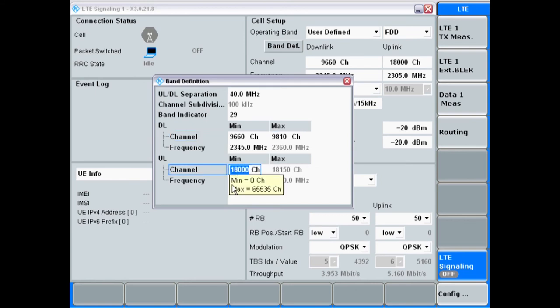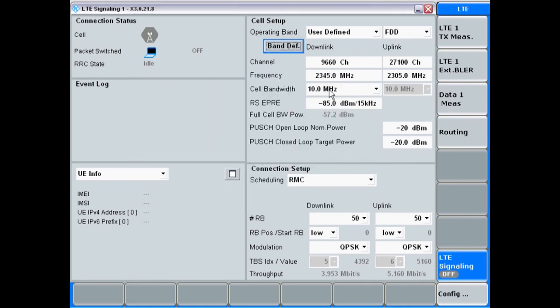Now the last thing I have to do is for the uplink. And here I only have to enter the channel number which was 27100, enter, and you see nicely it took everything over. So my lowest frequency for uplink is 2305 and for the upper part is 2320, comprising 15 megahertz of spectrum.